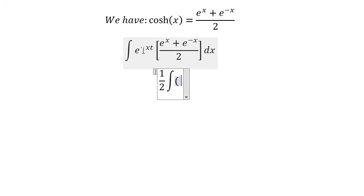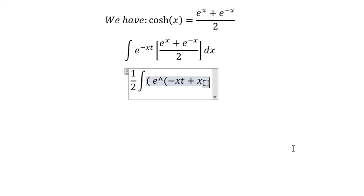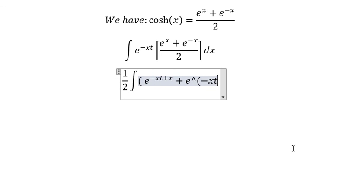We have e to the power of negative st multiplied with e to the power of x, and we get a power negative st plus x. And we have e to the power of negative st minus x dx.